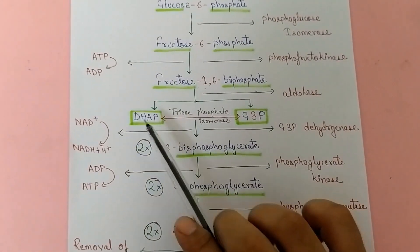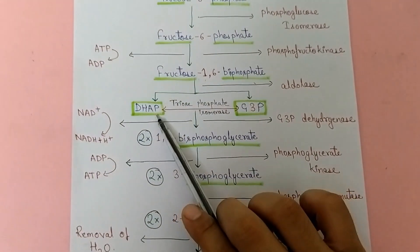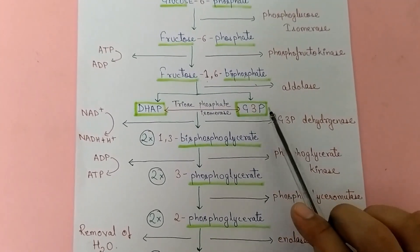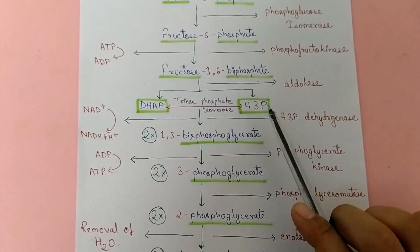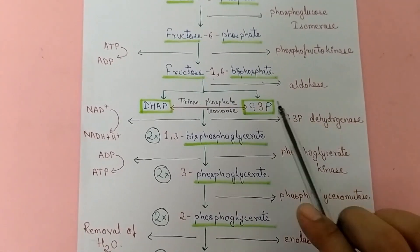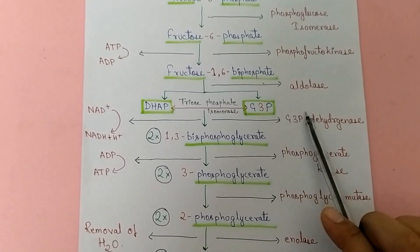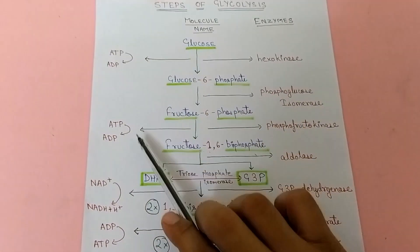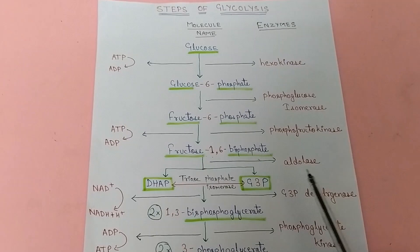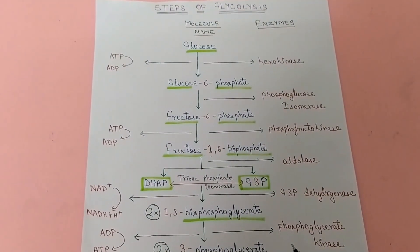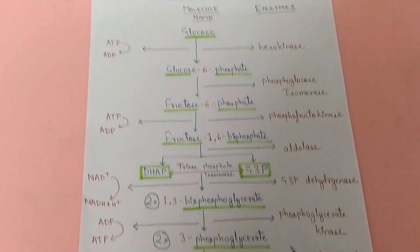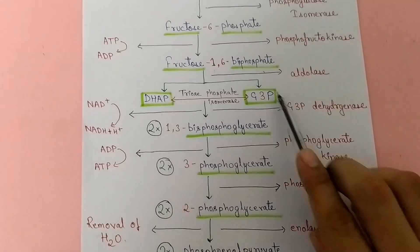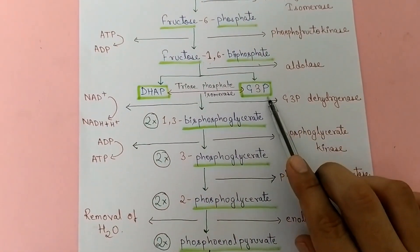One is the ketose dihydroxyacetone phosphate (DHAP) and one is the aldose glyceraldehyde-3-phosphate (G3P). Up to this level the preparatory phase of the reaction is over. In the preparatory phase we invest energy. The second phase, the payoff phase, is starting now, in which we obtain energy.